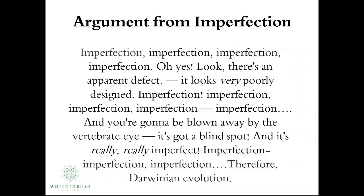But if we analyze Paul Mears's statement and put it in correct perspective, had he been honest about the flip side of his joke and what it hints towards, he would realize he's hitting an axe on his own foot. By simply replacing the expression 'complexity' with 'imperfection,' you find that neo-Darwinists are doing exactly the same thing: 'Imperfection, imperfection, imperfection, imperfection. Oh yes, look, there's an apparent defect. It looks very poorly designed. Imperfection, imperfection, imperfection, imperfection — and you're going to be blown away by the vertebrate eye. It's got a blind spot and it's really, really imperfect. Imperfection, imperfection, imperfection — therefore, Darwinian evolution.'